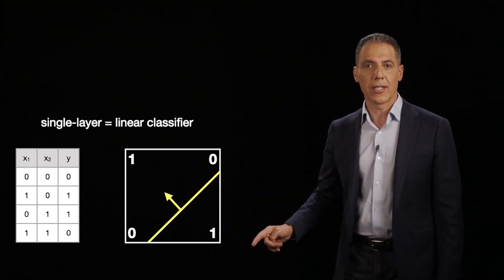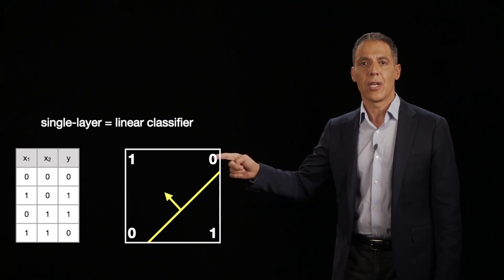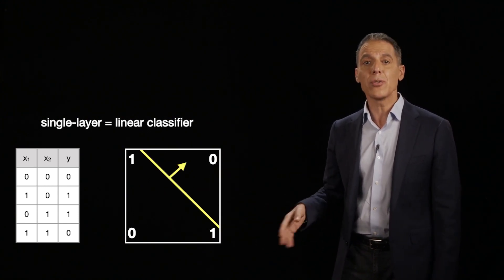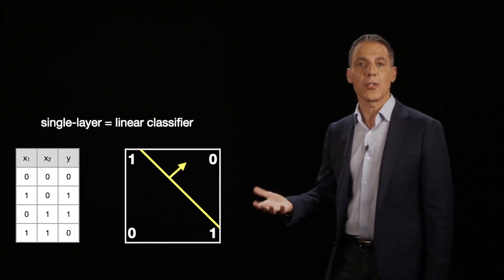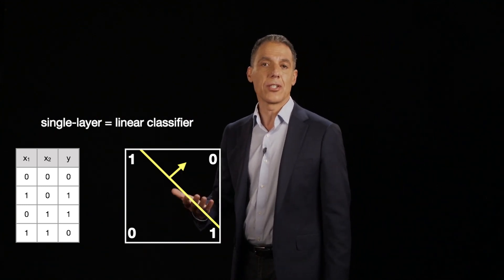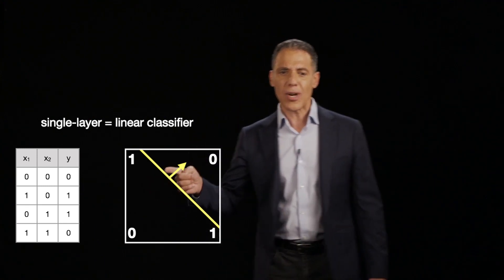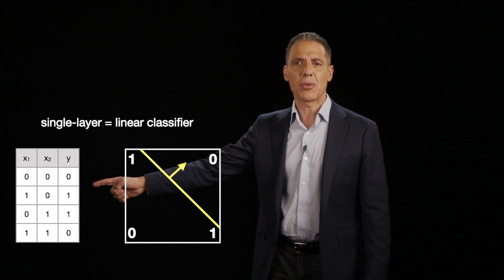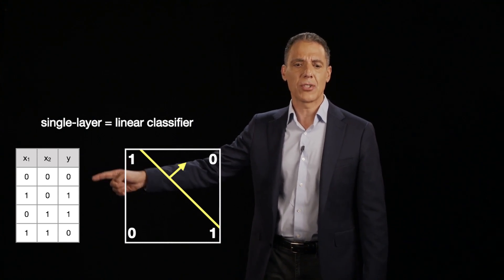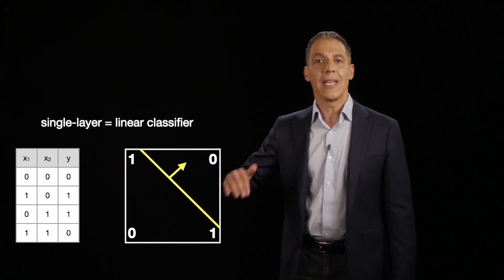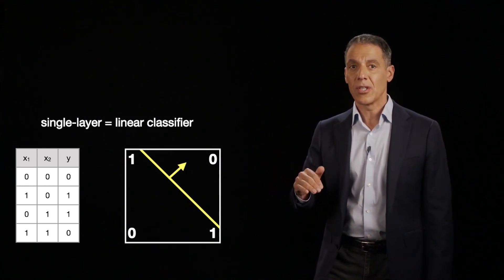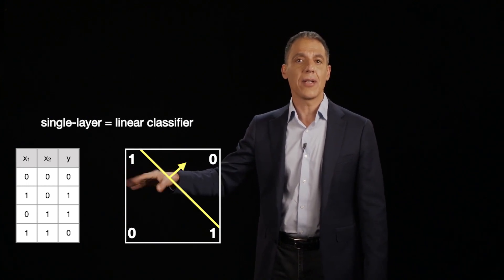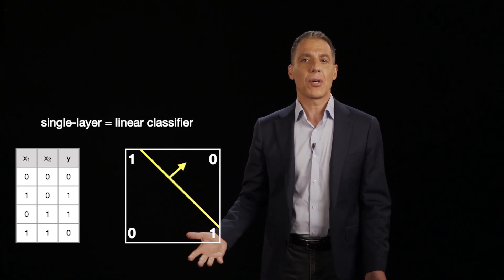Here's a line — well, that doesn't quite cut it because we drop one of the ones. Here's another line — that doesn't do it either. And no matter where you draw this line, you cannot solve this problem using linear models. That's a little surprising, because it seems like it should be a pretty easy problem: when the two values are the same, output 0; when they're different, output 1. And yet linear models — whether that's least squares, logistic regression, linear SVMs, or a neuron — simply can't solve the problem.